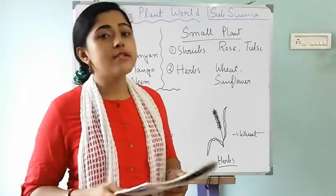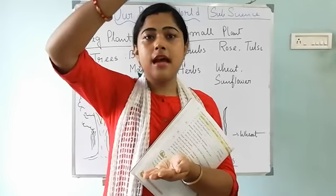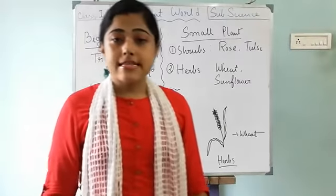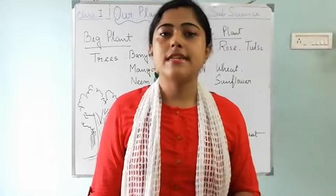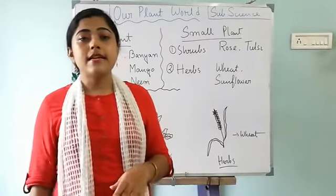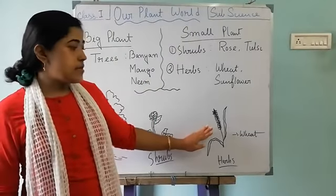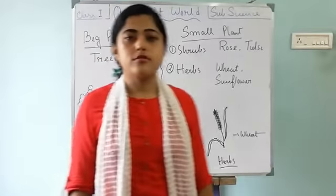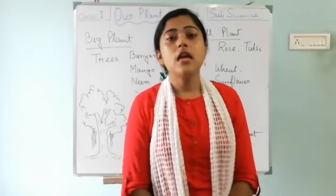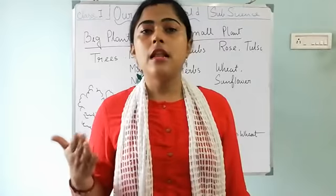Herbs are smaller than shrubs. The examples of herbs are sunflower and wheat. Aloe vera and mint are also examples of herbs. They have a very weak stem. Grapes, which is a fruit plant, and sunflower are also examples. So that is about big plants and small plants. Today we learnt about shrubs and herbs; the other types of small plants we will learn in the next class.